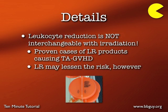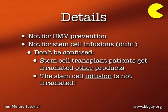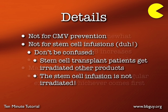A couple of additional details: leukocyte reduction is commonly used in the same patient groups that receive irradiated blood, but it is not the same thing. Leukocyte reduction is for CMV prevention and HLA immunization prevention — it may lessen the risk of TA-GvHD but is not sufficient by itself. Irradiation does not work for CMV prevention; you need leukocyte-reduced or CMV-negative products for that. Irradiation is also not to be used for stem cell infusions — you wouldn't want to irradiate the actual stem cell product, though stem cell patients would receive irradiated other blood products.